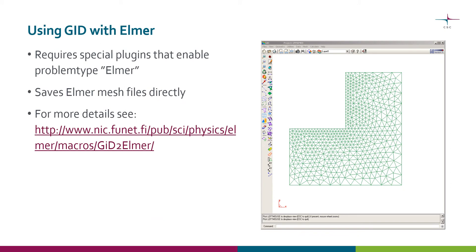Here is how GID works with Elmer. There is a special plugin that provides the problem type Elmer, and then you can save the meshes in Elmer format directly. If you are interested, you can download the plugin from the given address, along with some minimal instructions.